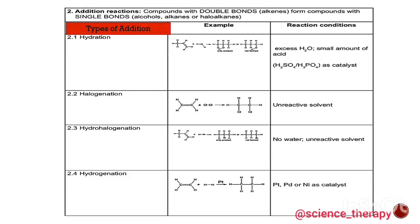Now let's look at addition reactions. This is when compounds with double bonds — your alkenes — form compounds with single bonds, either alcohols, alkanes, or haloalkanes. The first type of addition reaction is hydration. From the name we can tell that hydration is us adding water — to hydrate is to add water.